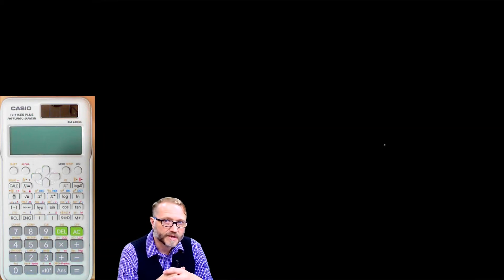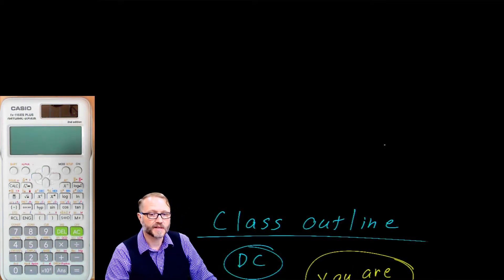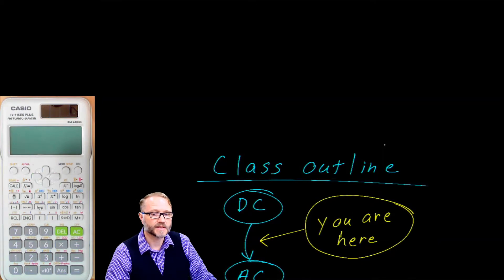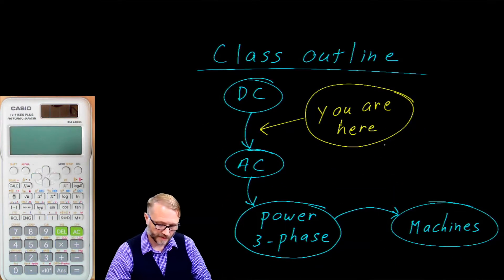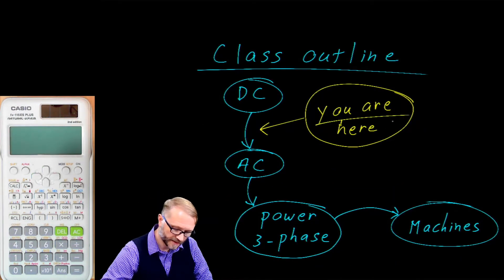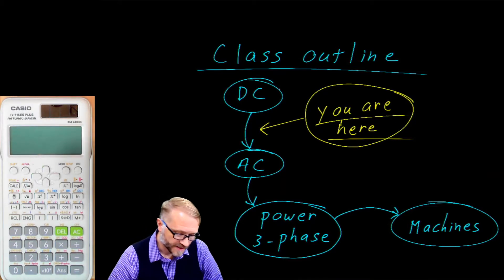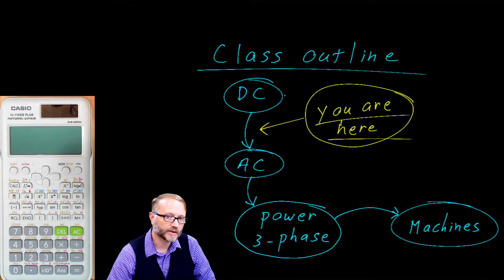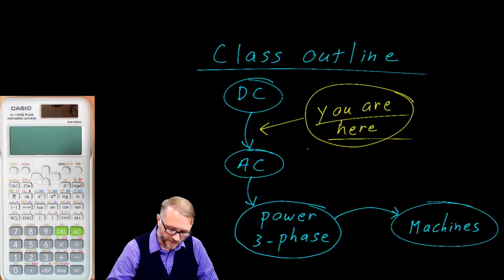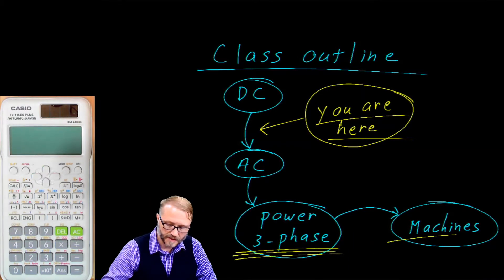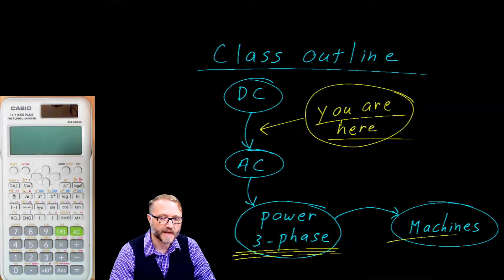Now that exam number one is behind us, it looks like we are on lecture number eight. A good place to start is to see where you are — and you are here at the transition between direct current and alternating current, which is going to lead to three-phase power and motors and generators.